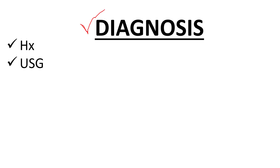Now we will talk about diagnosis. It is very important to make the diagnosis of breech presentation. First, you will ask the history — most females know the fetus is not in a normal lie. The patient may say the doctor told them the baby is in an abnormal lie. Second, the most important thing is ultrasound. A common exam question is: if a pregnant lady at term with breech presentation comes to you, what is the first investigation you will do? Remember — first do ultrasound, because on ultrasound you decide how to deliver the fetus.